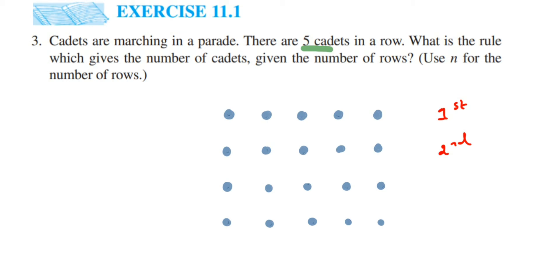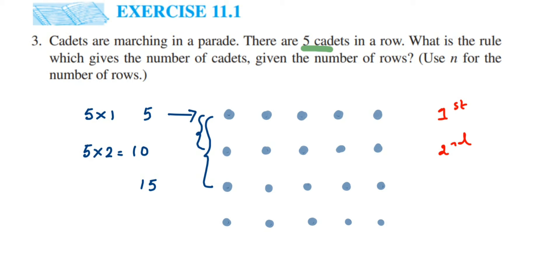If I have only one row I have five cadets. If I have two rows that is five plus five, I get ten cadets. If I have three rows I get fifteen. So looking at the pattern: five is five into one — one being the first row. In the second row, five plus five becoming ten is actually five into two, because there are two rows. For the third row, it's five into three, because five plus five plus five equals five into three.